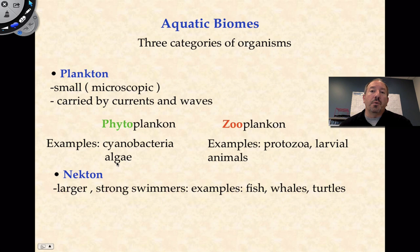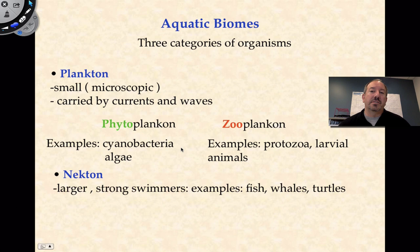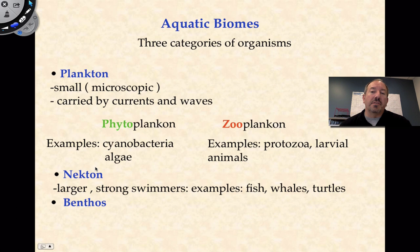Nekton means swimmer, and the thing most people consider nektonic is fish — large, strong swimmers, larger compared to zooplankton. They get progressively larger — picture that cartoon of the big fish eating a little fish, eating a little fish, ultimately eating the zooplankton and then the phytoplankton. So that could be something huge like a whale or sea turtle — a swimmer.